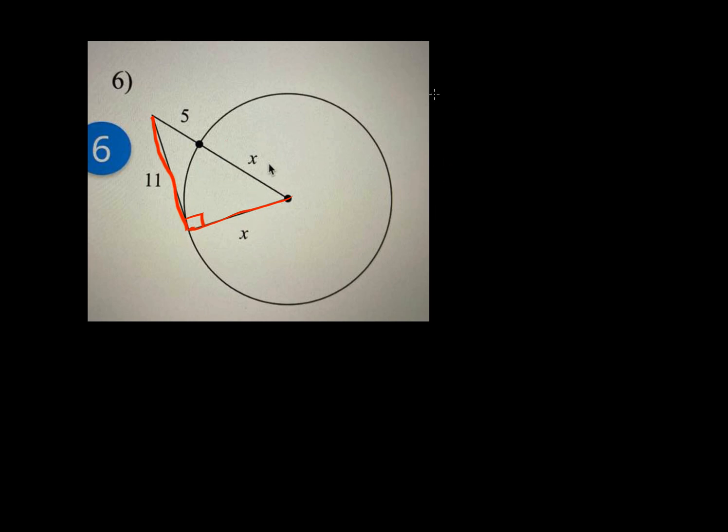So we have one leg squared, that's X squared, and another leg, it's 11 squared, should equal to hypotenuse squared. Hypotenuse is 5 plus X, the whole thing squared.